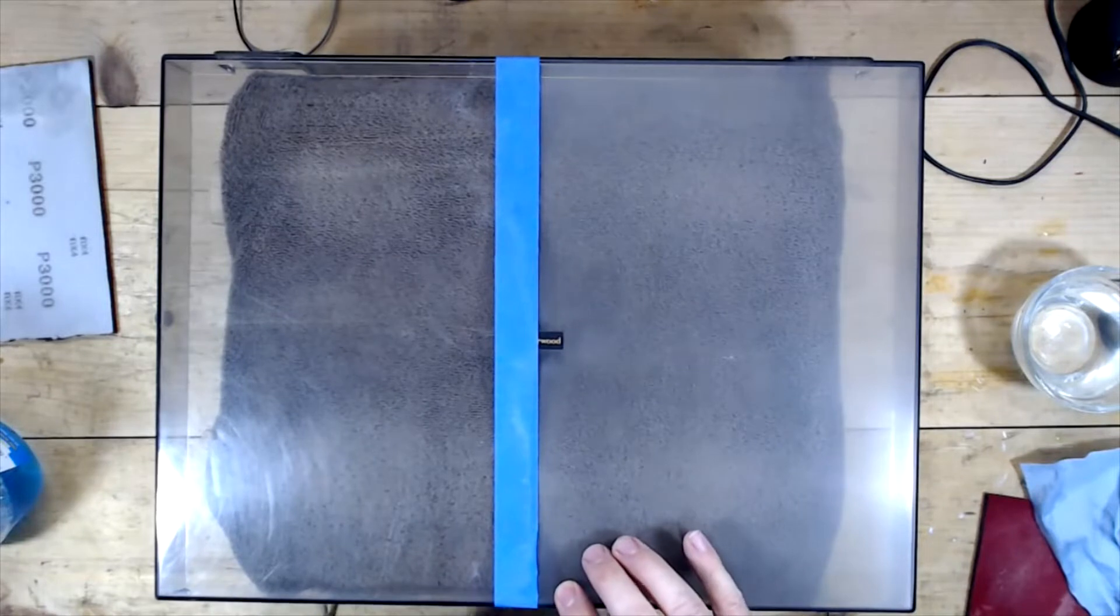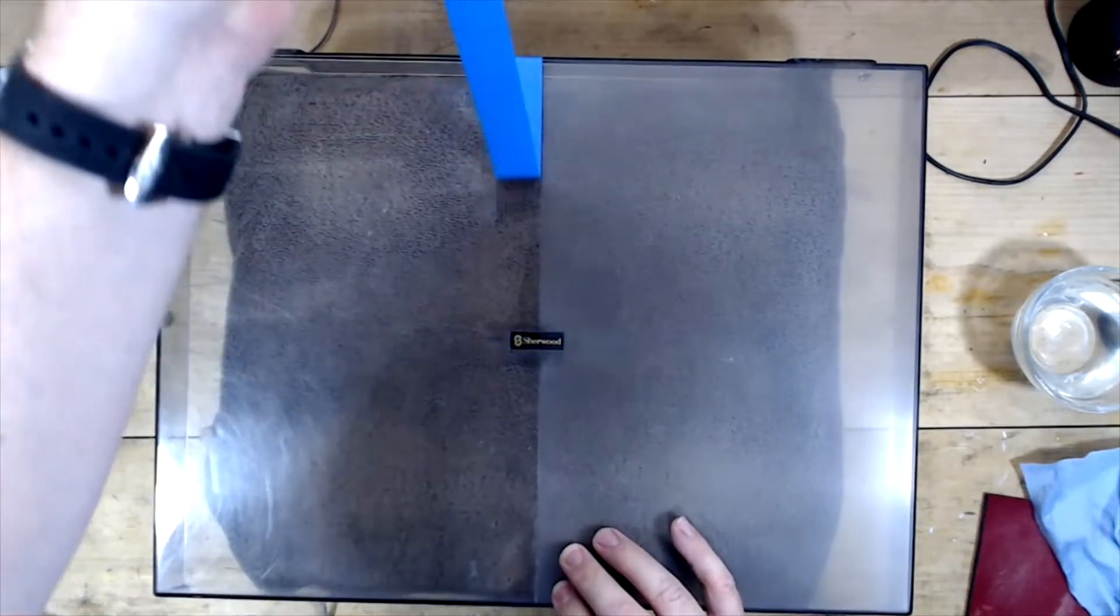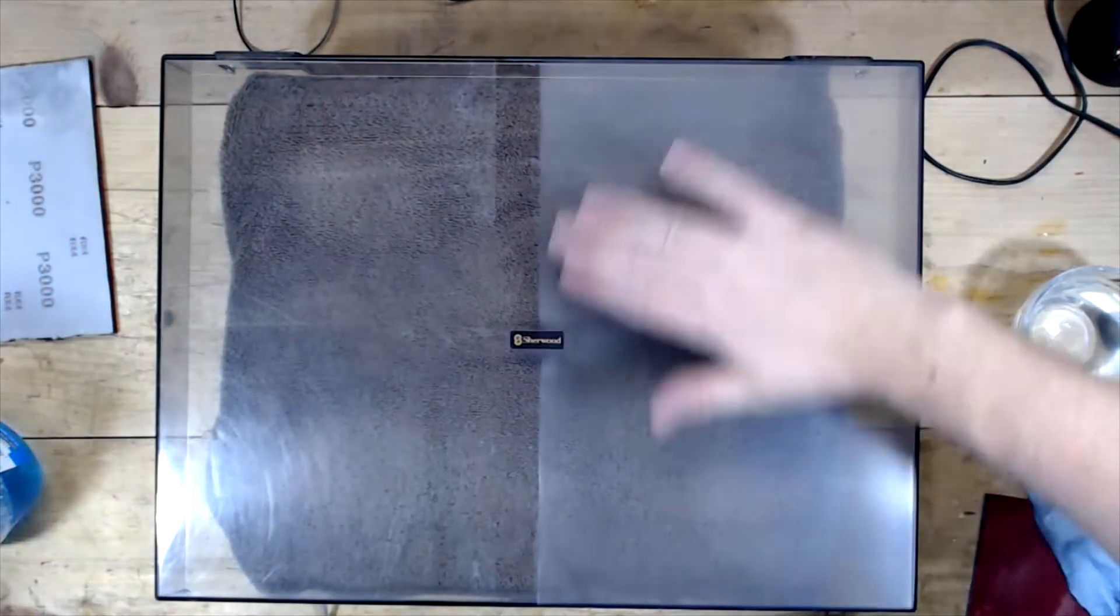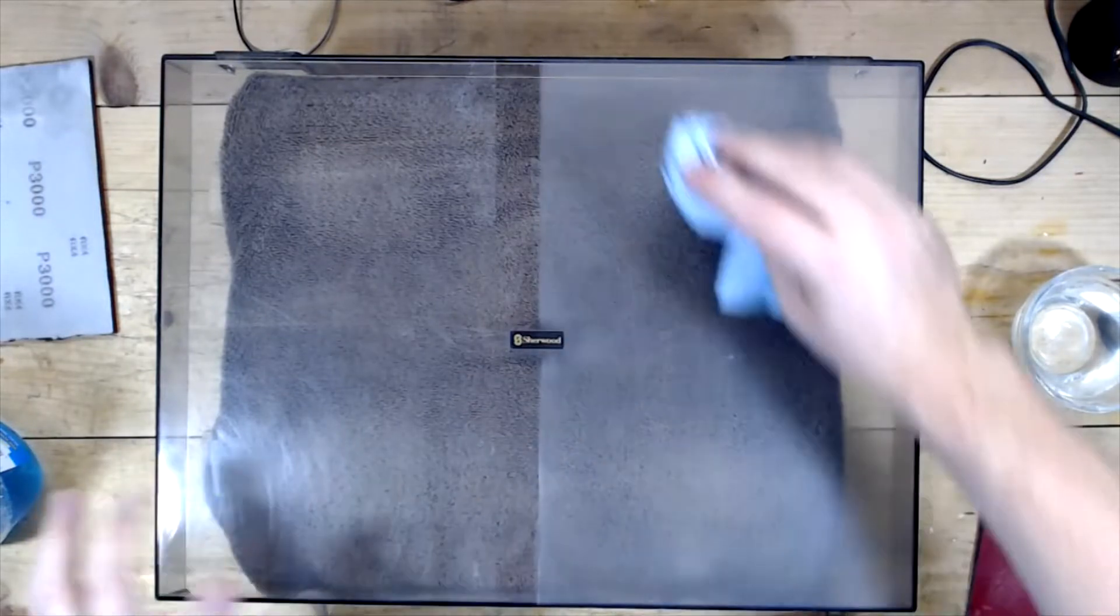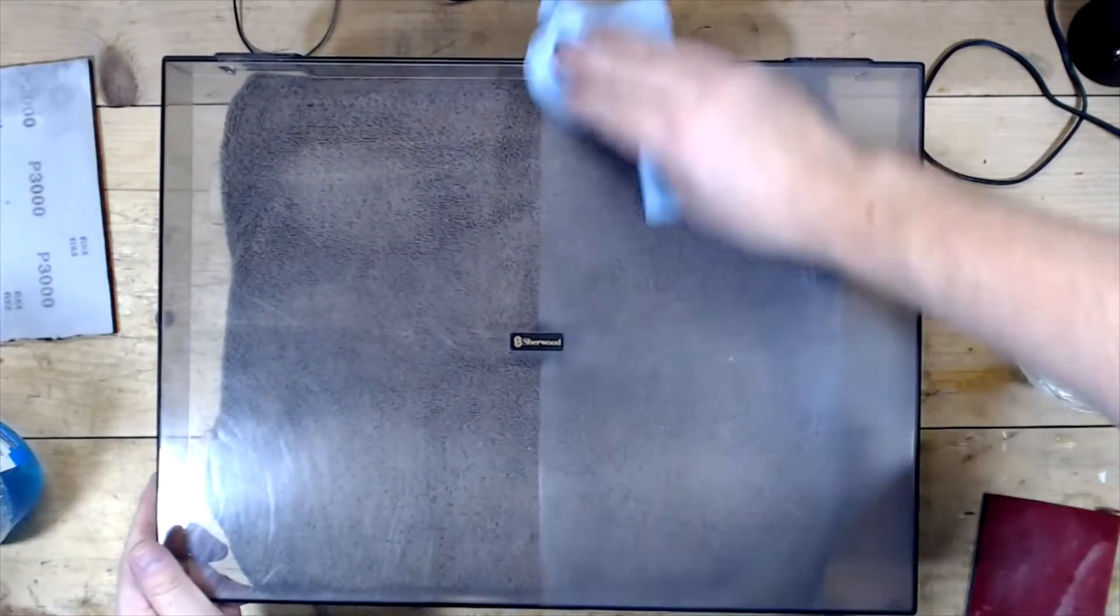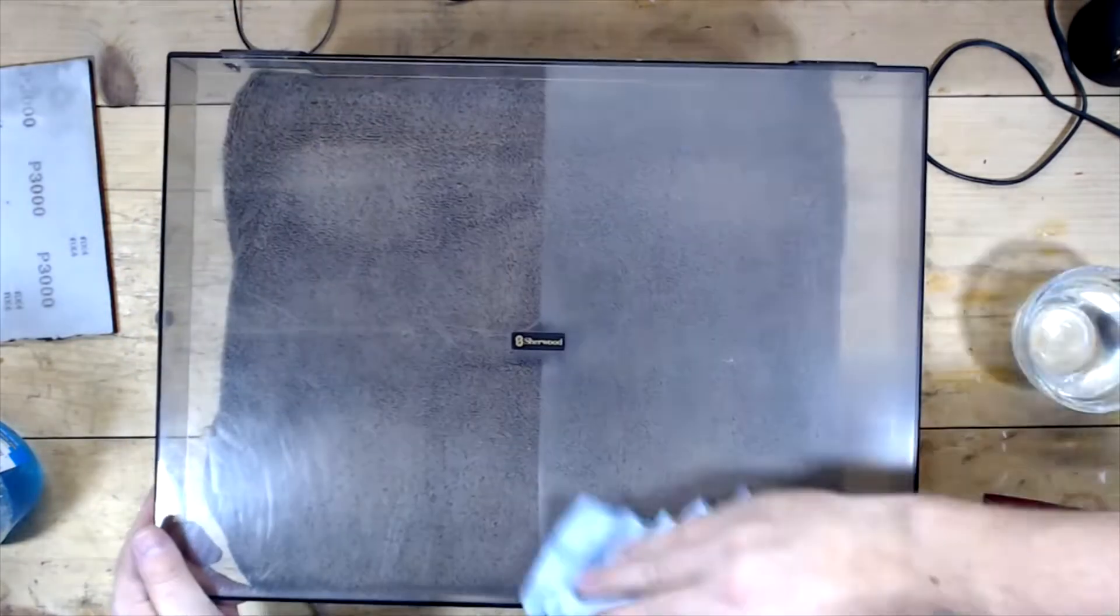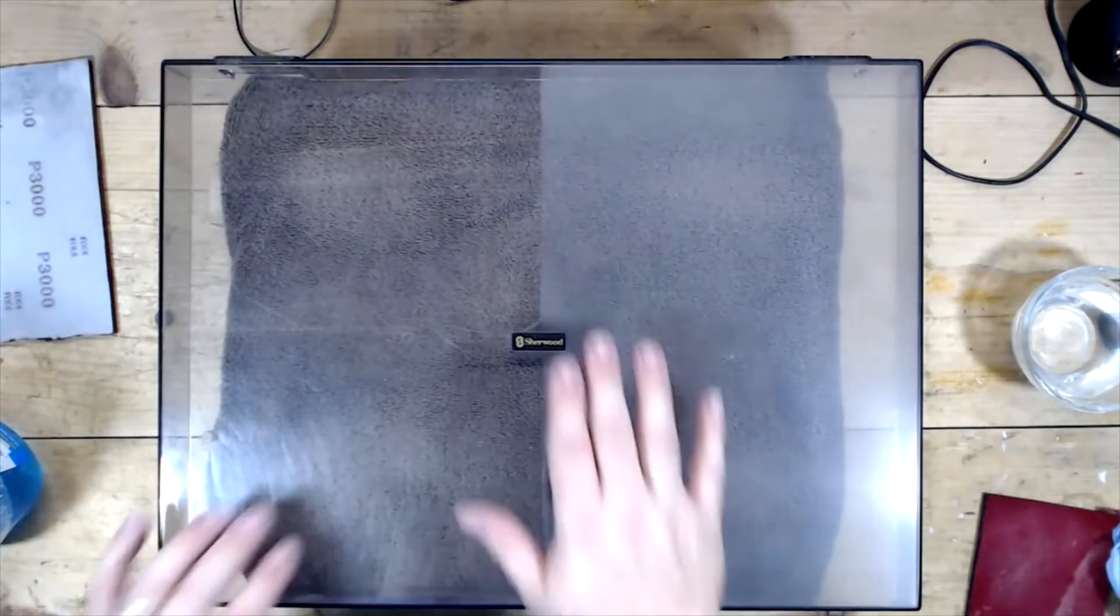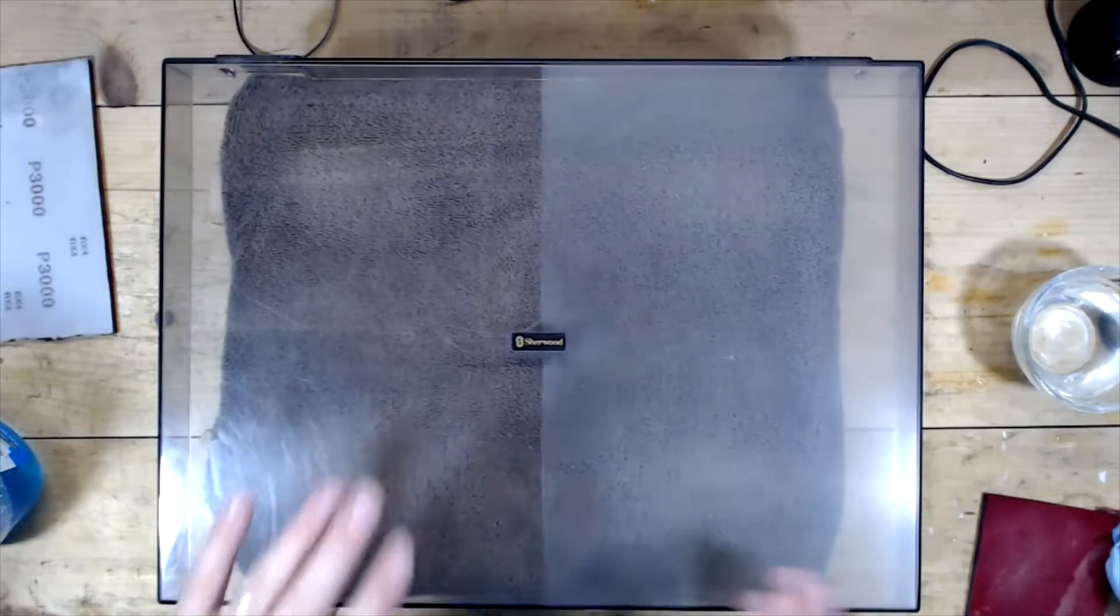So I'm going to pull the tape off just so we can see kind of the line between both sides. And you can see how by roughing this up with the sandpaper, it's actually kind of created a not really a film, but you know, kind of looks like there's a film over it, which is normal.